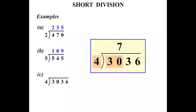4 into 30. Well, that goes 7 times. 7 fours are 28. So there's 2 left over.